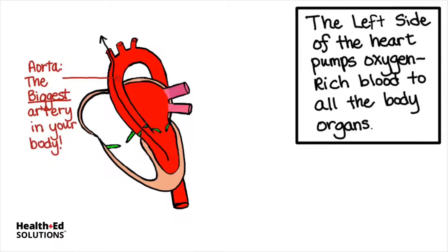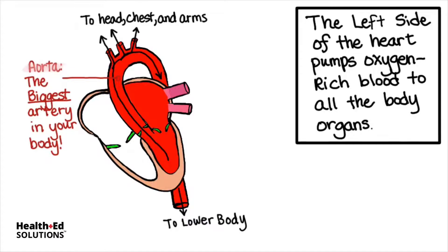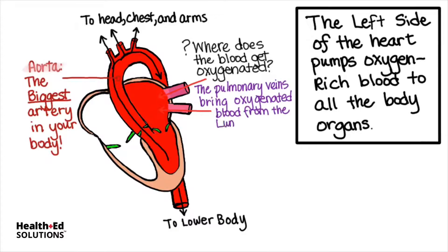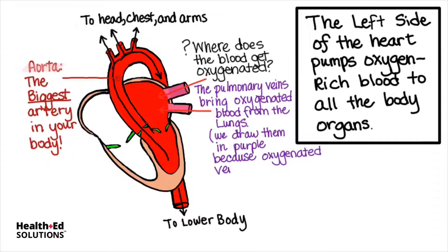The aorta is the biggest artery in your body as well. This oxygenated blood is sent to the head, the chest, and the arms, and also down to the lower body. But where does this oxygenated blood come from? It comes from the pulmonary veins. These oxygenated veins bring blood from the lungs. And if you're wondering why they're purple, we draw them in purple because veins are typically deoxygenated. This is an exception in your body because it is a blood vessel going back to the heart.